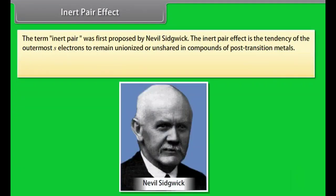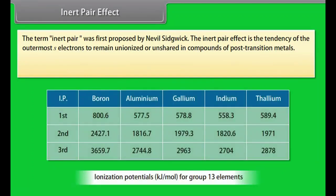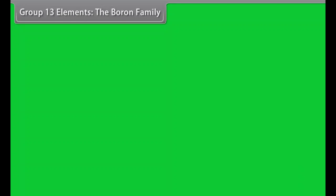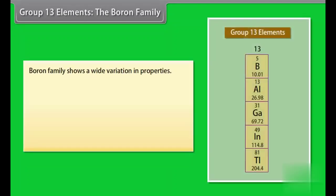Inert pair effect. The term inert pair was first proposed by Neville Sidgwick. The inert pair effect is the tendency of the outermost s electrons to remain unionized or unshared in compounds of post-transition metals. The term inert pair effect is often used in relation to the increasing stability of oxidation states that are 2 less than the group valency for the heavier elements of groups 13, 14, 15 and 16.